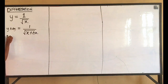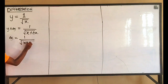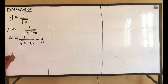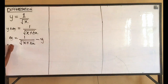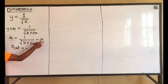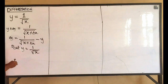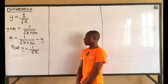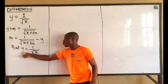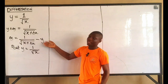Taking y to the other side, I'll have that change in y is equal to 1 over root(x + Δx) minus y. Now y was equal to 1 over root x, so I substitute that in. Anywhere I see y, I'll put in 1 over root x as the value for y.